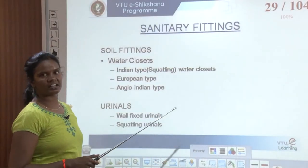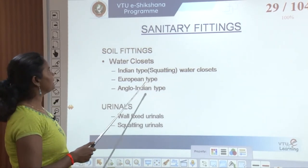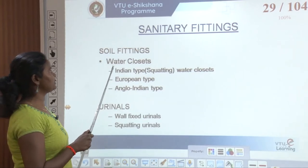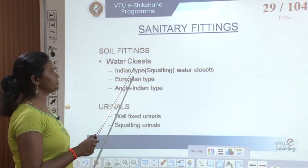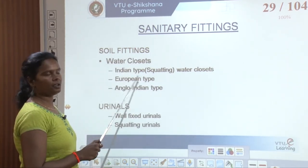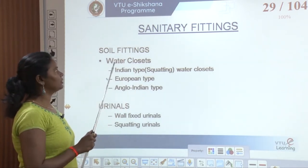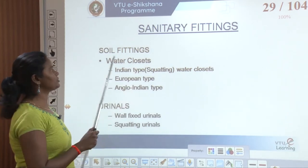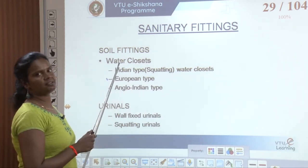In house drainage we look at different equipment and fittings used. These can be classified under sanitary fittings. In sanitary fittings there are soil fittings — soil fittings are nothing but water closets. In water closets we have Indian type, European type, and Anglo-Indian type. Mostly what we use is Indian type and European type. These are considered soil fittings because the waste generated from them is considered soil, so the pipe connected to drain them out is also a soil pipe.